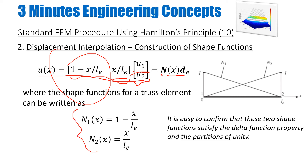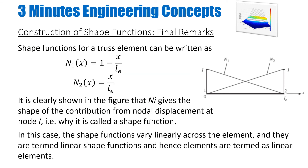As I told you before, it is very important that any shape functions — whether for truss elements, 2D elements, 3D elements, or solids — must satisfy two conditions. The first is called the delta function property and the other is the partition of unity property. The delta function property means that any shape function Ni equals 1 at its own node i and equals 0 at all other nodes. For example, N1 equals 1 at node 1 and 0 at node 2; N2 equals 1 at node 2 and 0 at node 1.